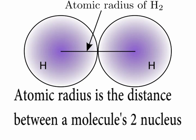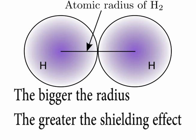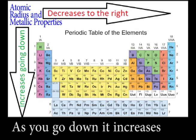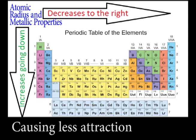Atomic radius is the distance between a molecule's nuclei. The bigger the radius, the greater the shielding effect. Across the table, radius decreases. As you go down, it increases, causing less attraction.